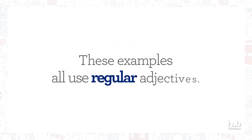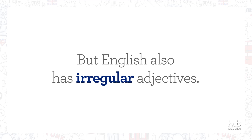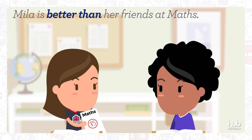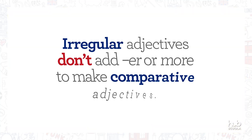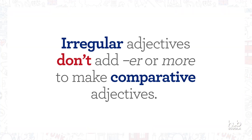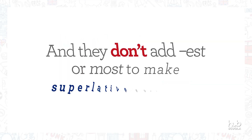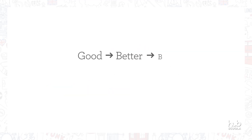These examples all use regular adjectives. But English also has irregular adjectives. Mila is better than her friends at maths, but Cassie is the best at maths in Mila's class. Irregular adjectives don't add -ER or 'more' to make comparative adjectives, and they don't add -EST or 'most' to make superlative adjectives. Good, better, best. Bad, worse, worst.